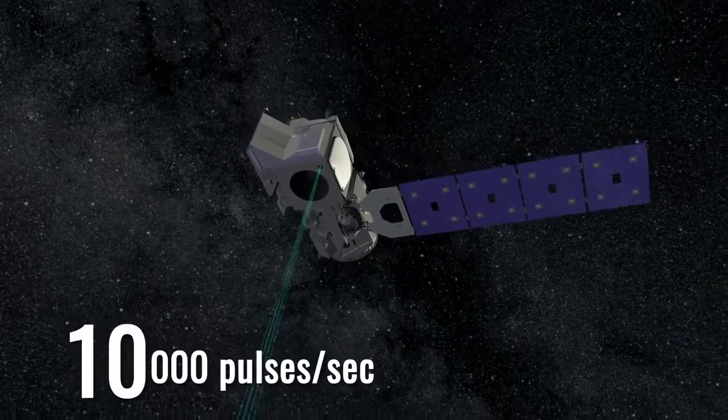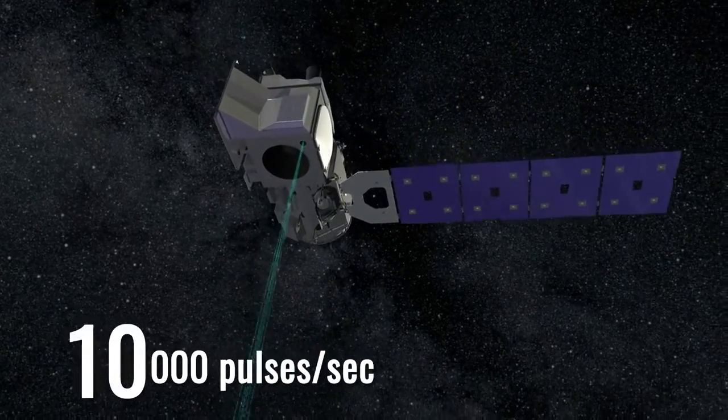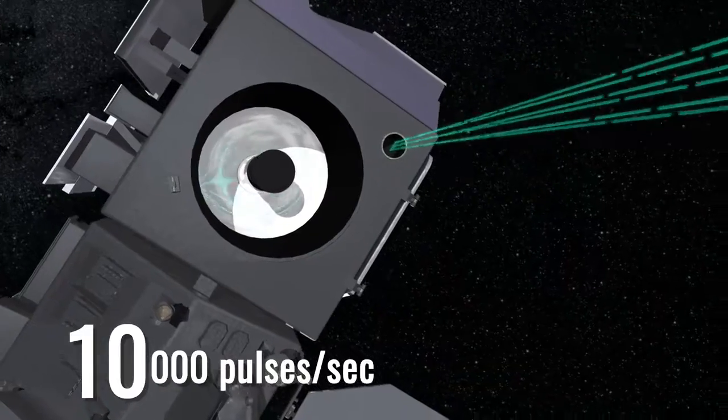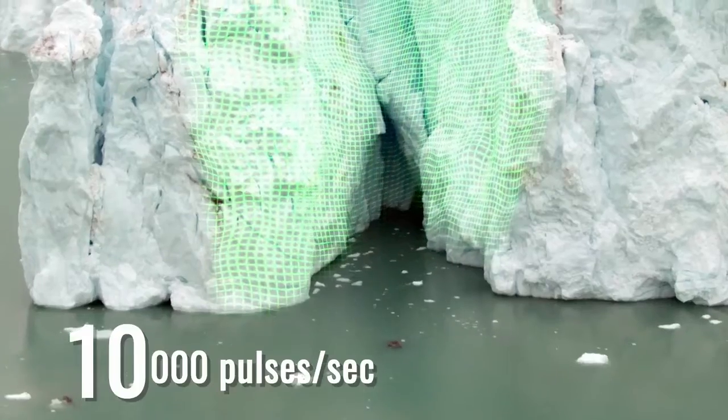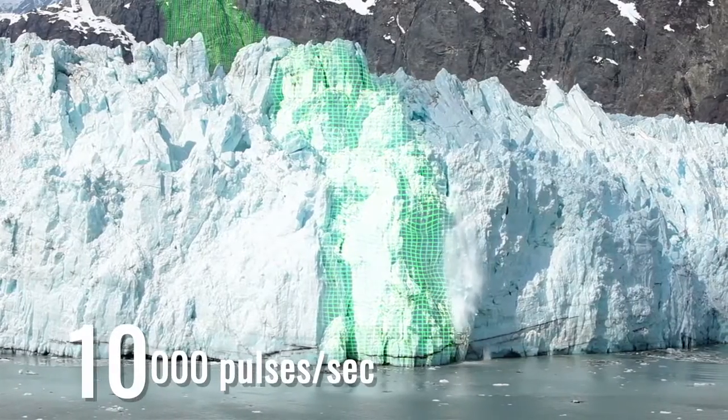10,000! That's how many times the ICESat-2 laser will fire each second. More pulses mean more height data. The fast-firing laser will allow us to measure the average annual change in the vast ice sheets down to the width of a pencil.